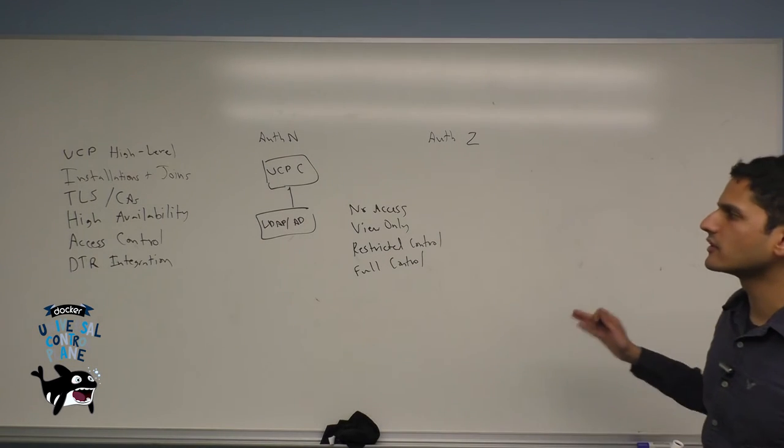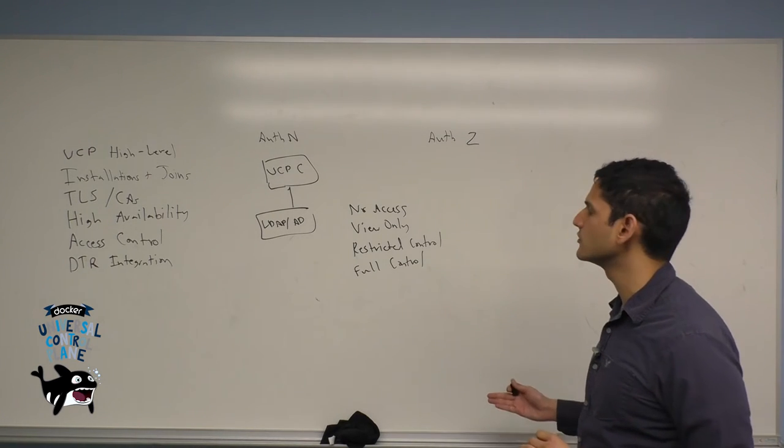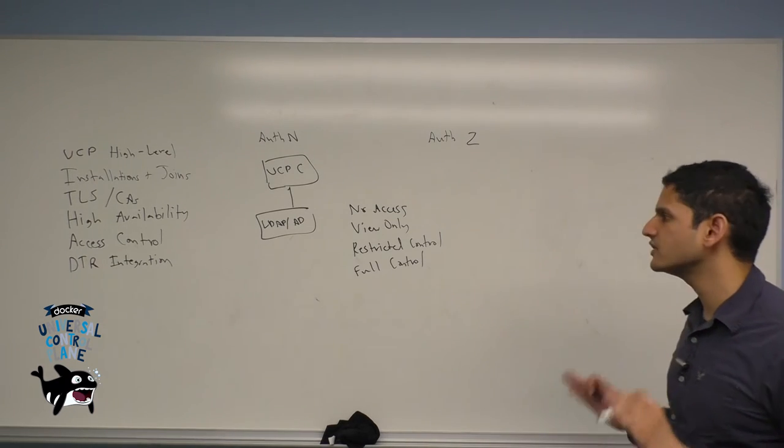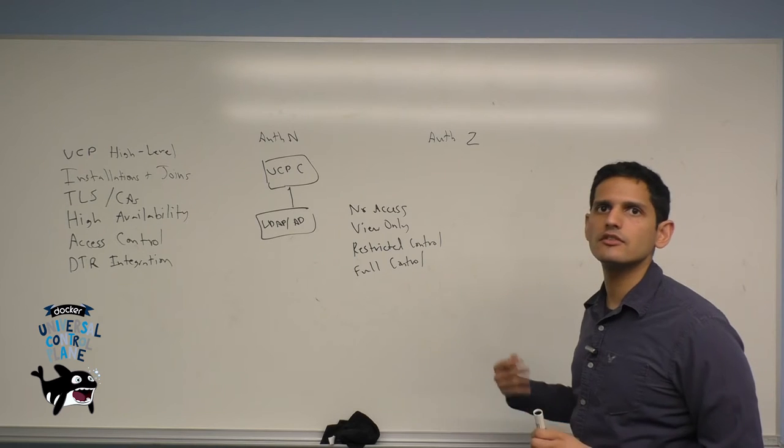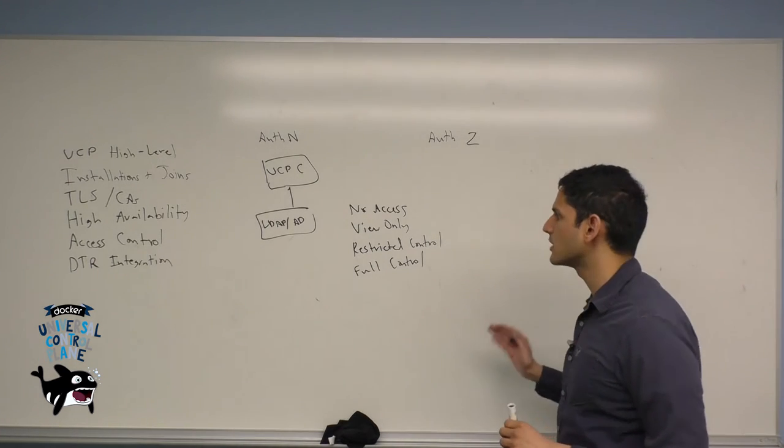Each of these represents a different level of access to individual container and non-container resources within your UCP environment. Full control means that you are able to see and access all resources. You can start containers, stop containers, restart them, kill them. You're able to view and look at images, networks, and volumes.